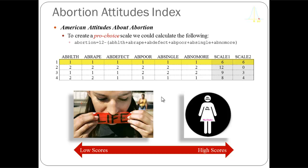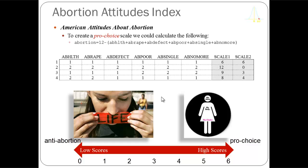Now look at person one — the person who in every circumstance felt a woman should always be allowed to have a legal abortion. They were coded yes for each variable and the sum of all ones was six. Twelve minus six is six, so their score stays the same numerically but is now the highest score, not the lowest. We've swapped the low score for the high score and set the scale to range from zero to six instead of six to twelve. Persons three and four are affected the same way — their scores are reversed so the final values represent degree of pro-choice attitude.